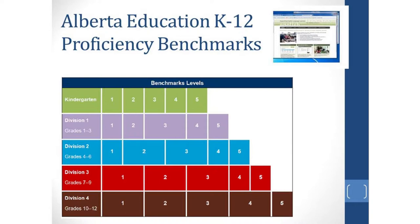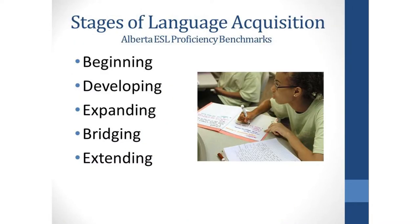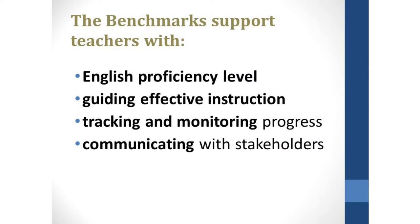You can also see a visual of the different levels of proficiency at each division level. They are numbered one to five, and the benchmarks also have a name. In Alberta, the benchmarks are described as: beginning, which is level one and the lowest proficiency; two, developing; three, expanding; four, bridging; and five, extending. It is important to be familiar with the benchmarks so that you know the proficiency level of your student and where they're at, as this guides instruction. The benchmarks are also used to track progress and as a way to communicate that progress to parents and other stakeholders.